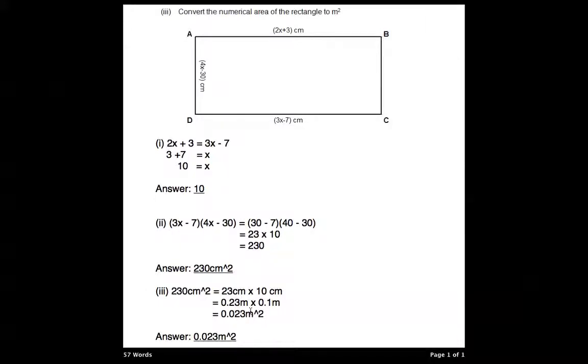So 0.23 meters times 0.1 meters equals 0.023 meters squared. So the answer for part 3 is 0.023 meters squared. Thank you.